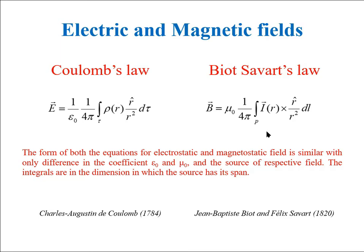They read E equal to 1 by 4 pi epsilon naught multiplied by volume integral of volumetric charge density divided by r square where r is the distance from the source. And magnetic field induction B is equal to mu naught by 4 pi multiplied by line integral of current divided by r square.